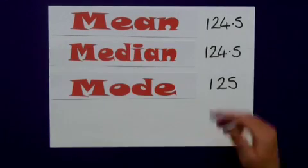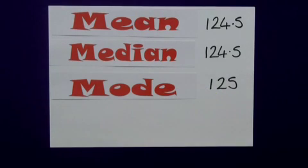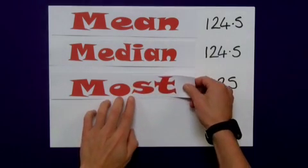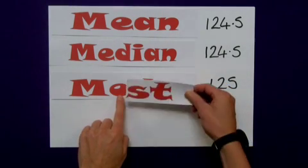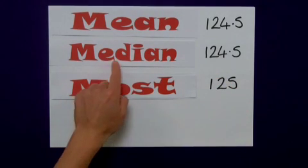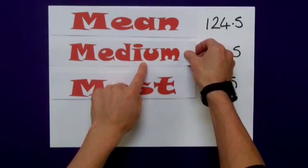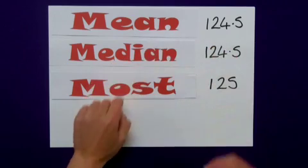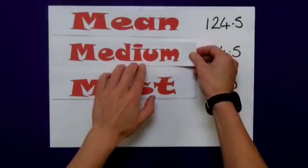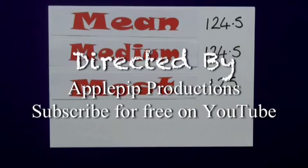Is there an easy way of remembering what each of these stand for? Well, not really, but one way I remind myself: mode is almost the word 'most', so the mode is the most frequently occurring number. Median is almost the word 'medium', and medium means middle — so the median is the middle number, once all values are in order. And the mean is the last of the three. I hope that helps.